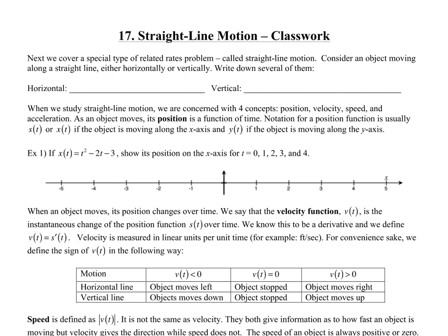Some real-life examples: for horizontal motion it could be a train on a track; for vertical motion, any projectile — you could talk about up and down. I'll have to remember to show you that video about the Civil War cannonball.